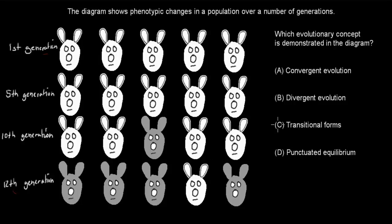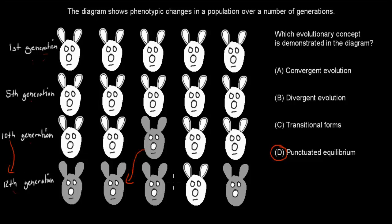Welcome back. The correct answer is D — punctuated equilibrium. Punctuated equilibrium means there is a sudden change in the environment causing a sudden rapid evolution that quickly changes the species. Here, from the first to the tenth generation things were more or less the same, then one sudden change occurred, and from the tenth to twelfth generation that change took over. Nothing to do with transitional forms, convergent, or divergent evolution. D is correct.